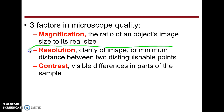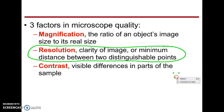Probably the biggest factor that determines how well we can see things is resolution. Resolution is the ability to distinguish between two things that are really close together and still see them as two separate things. For example, if I put two dots here, most people could see them as two dots. But if I put them really close together and you were way in the back of the room, it might look like one dot, because you can't distinguish the tiny distance between them.